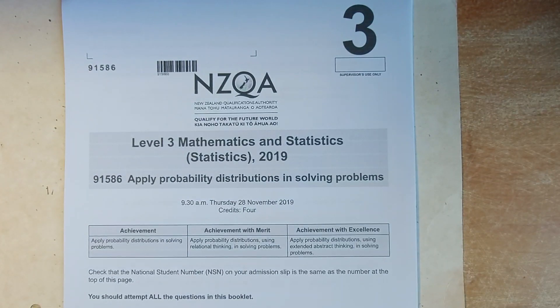Good morning everyone and welcome to Mr. Ong Mat's lesson again. Today we are looking at the Level 3 Statistics Paper Probability Distribution. The paper title is 91586. Let's go!